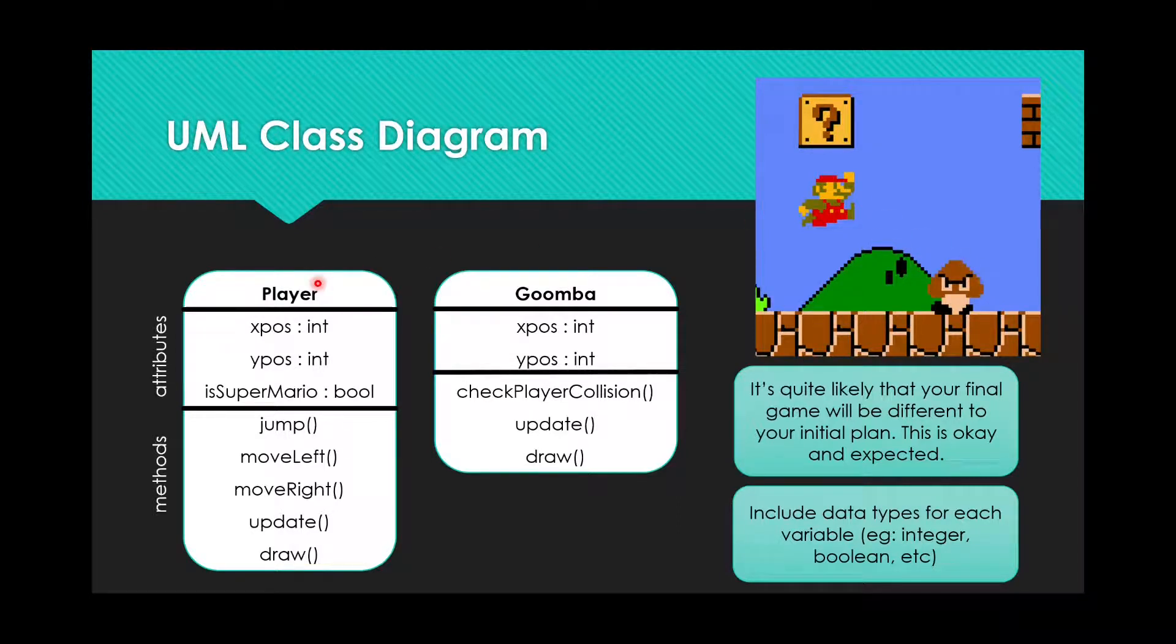The player needs, we need to store some information about the player. For example, we need to store its horizontal position, x-pos. You don't have to call it x-pos, call it x-position, horizontal position. I don't care, but we need to remember its horizontal position.